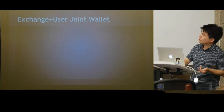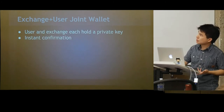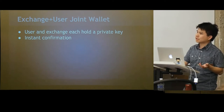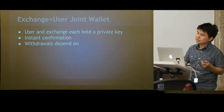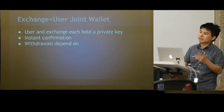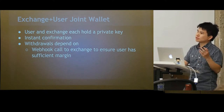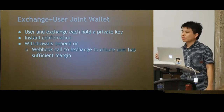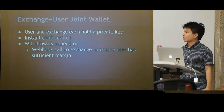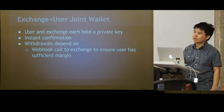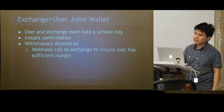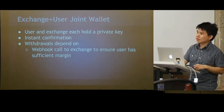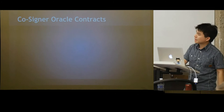The final exchange model is the exchange-plus-user joint wallet, where the exchange and user each hold a private key. You can get instant confirmations because BitGo and the exchange won't double-spend. To prevent the user from running away with coins after placing a limit order, BitGo makes a webhook call back to the exchange to ensure the user has sufficient margin. If the user wants to withdraw and has outstanding unclosed trades, we'll block the withdrawal until they're closed. If the exchange disappears, the user can still recover funds since they hold a key.